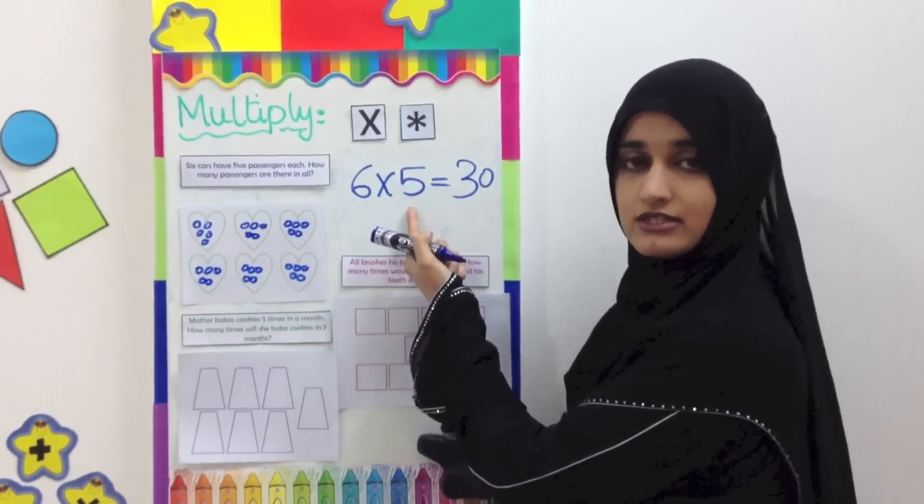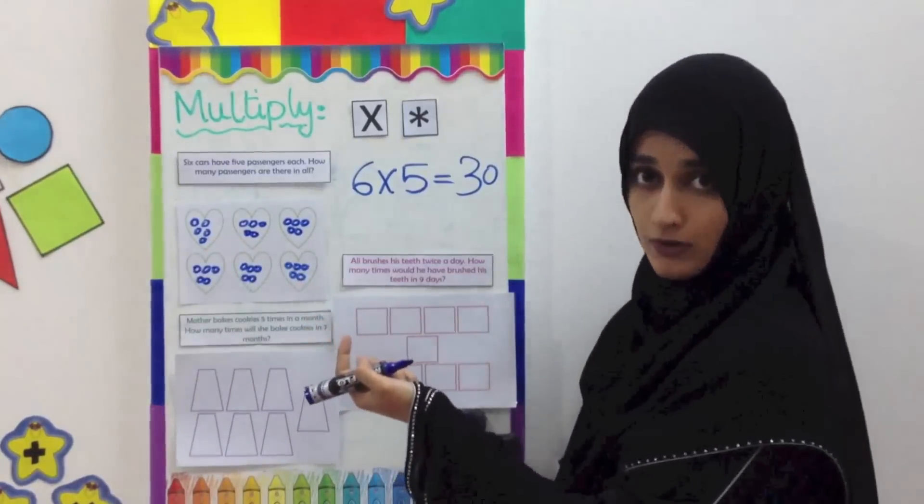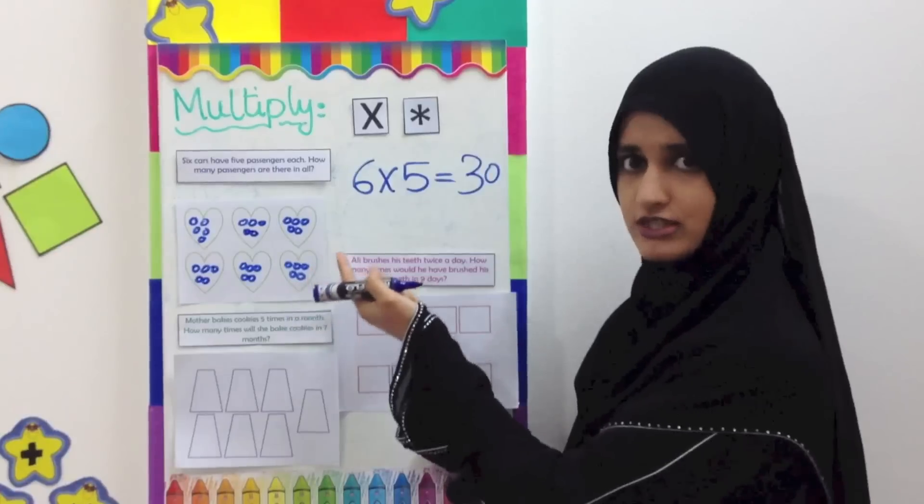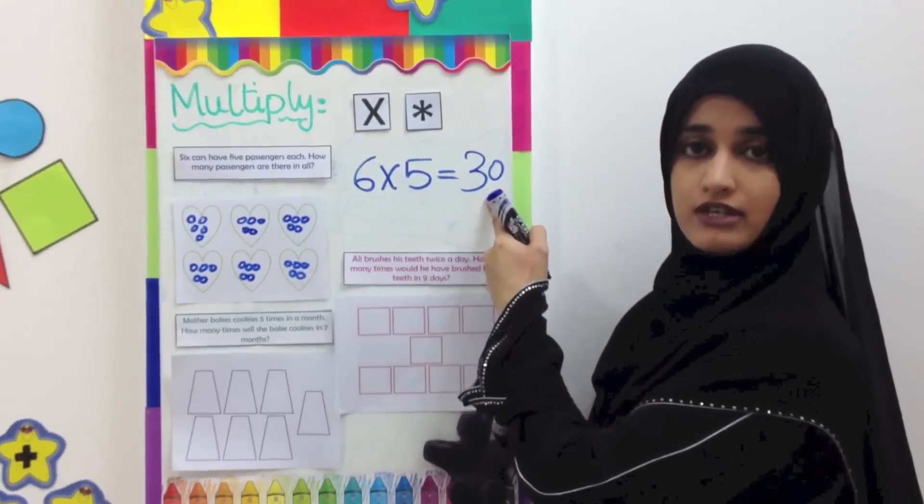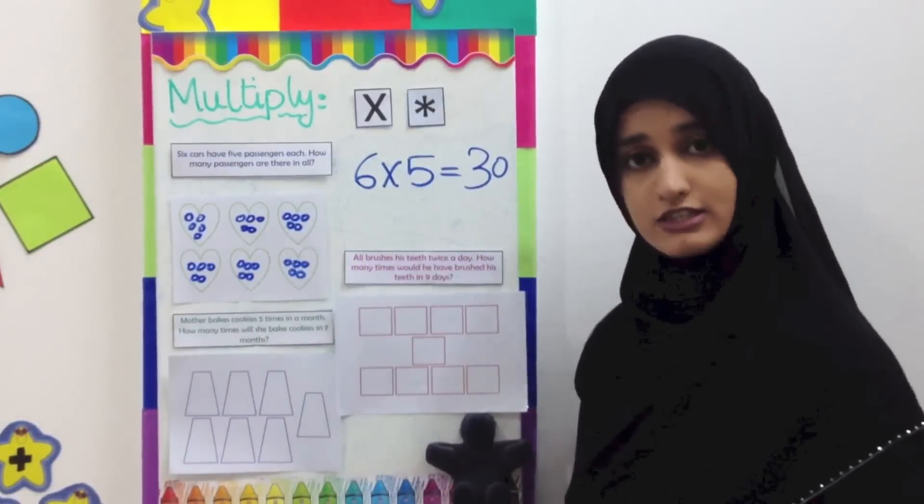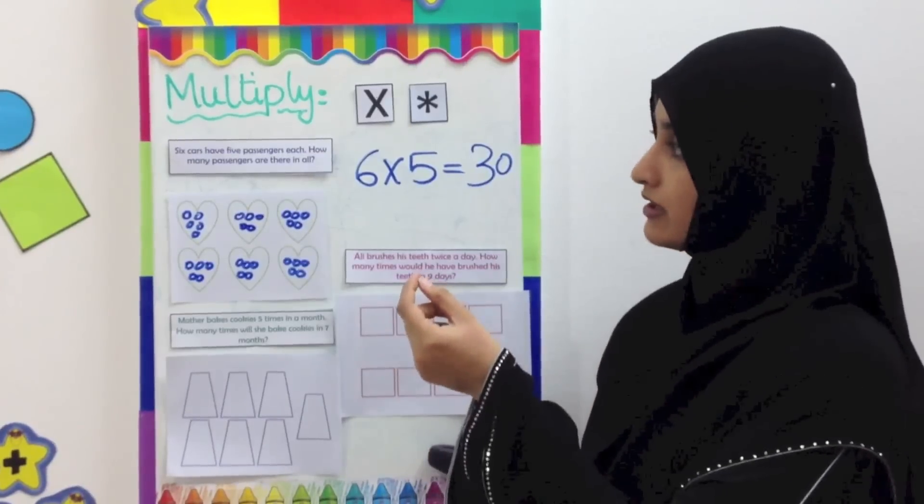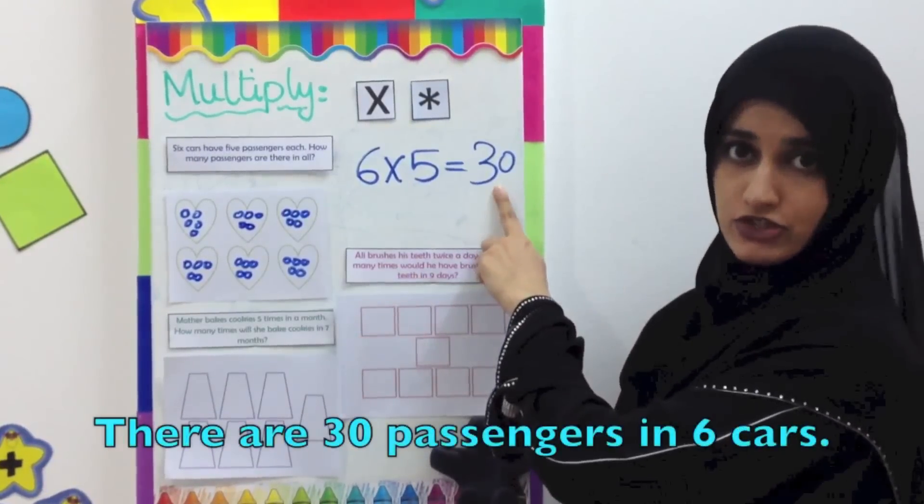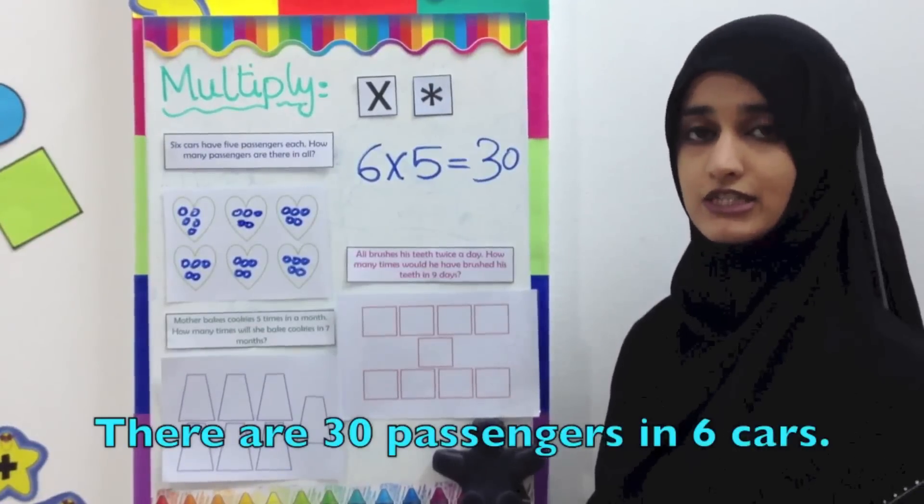The second number, five, is the set size, so each set has five objects or five passengers in this case. The total here, the last number, is the total number of passengers. So the answer is going to be like a statement: you're going to write down there are thirty passengers in all the cars, or you can say there are thirty passengers in the six cars.